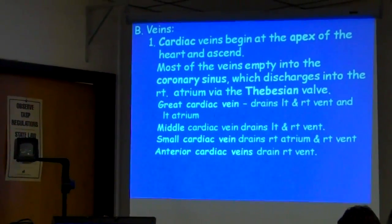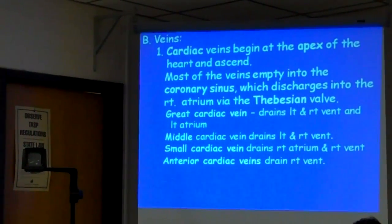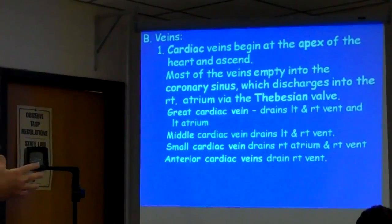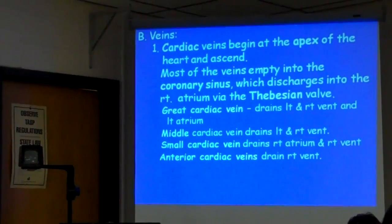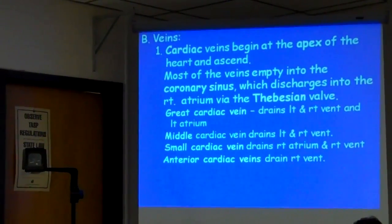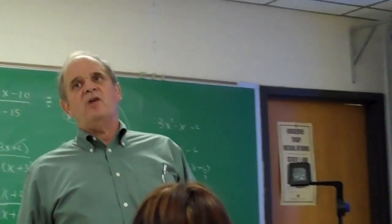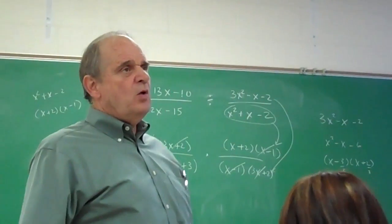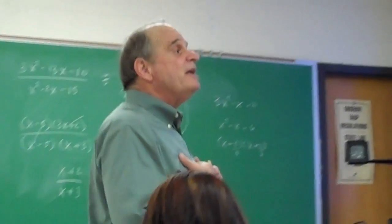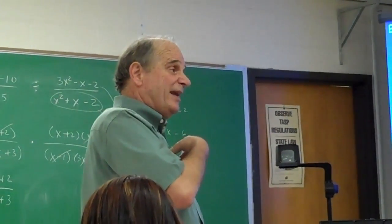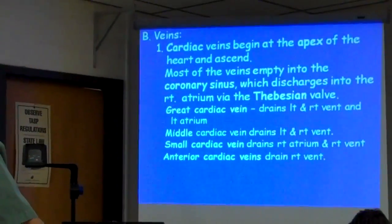We don't hear much about vein problems in the heart — the problem is most often with a coronary artery. But the veins do play a role; they've got to get the blood back. Remember, all the venous blood from the body and the heart itself — where does it all go back to? The right atrium. Whether from the body or from the heart muscle itself, all venous blood ends up back in the right atrium.